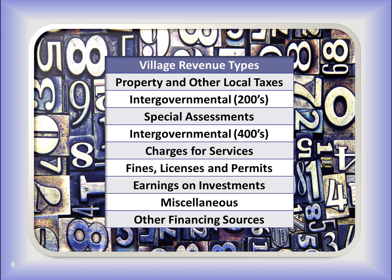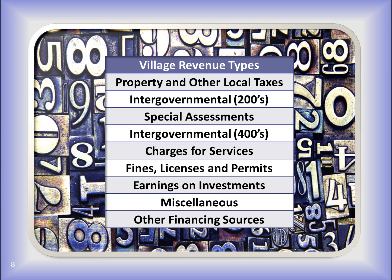Here are the revenue types that belong to the Village Chart of Accounts. Within each of these categories are more specific revenue codes. Note that there are two intergovernmental types on the Village Chart. The revenue codes that belong to these intergovernmental categories represent very different revenue. You would have to read the descriptions for the revenue codes within both categories to find the correct revenue code.